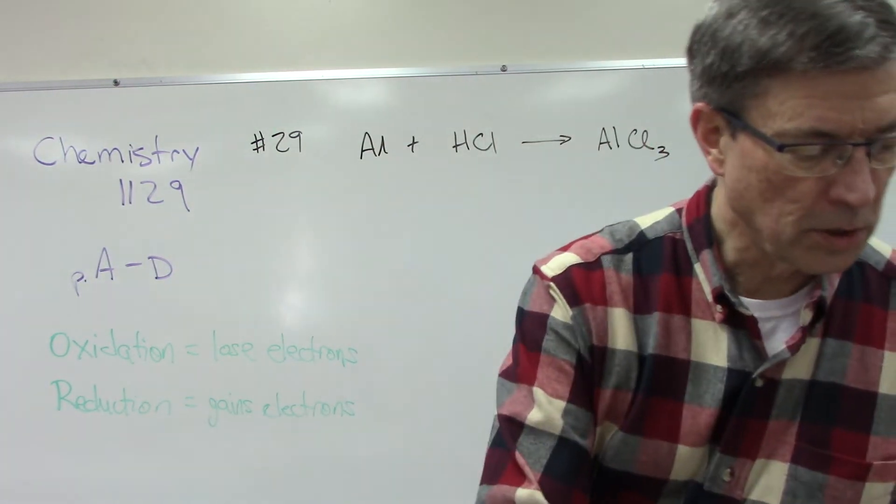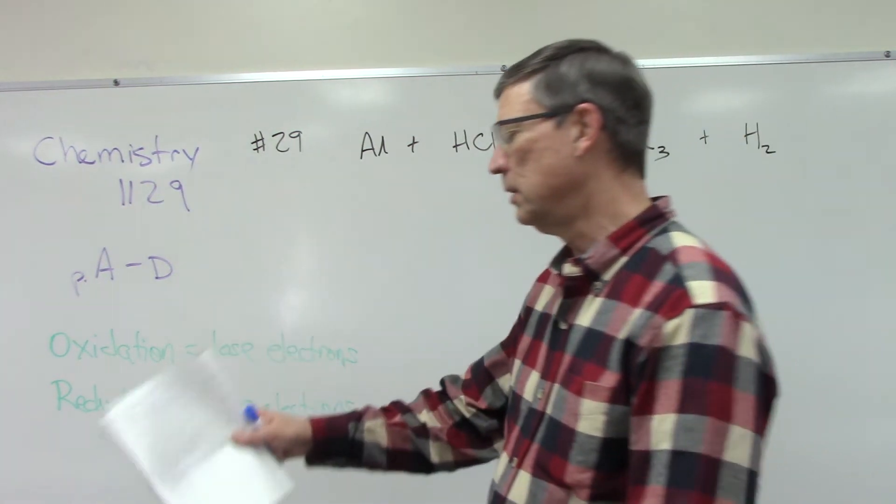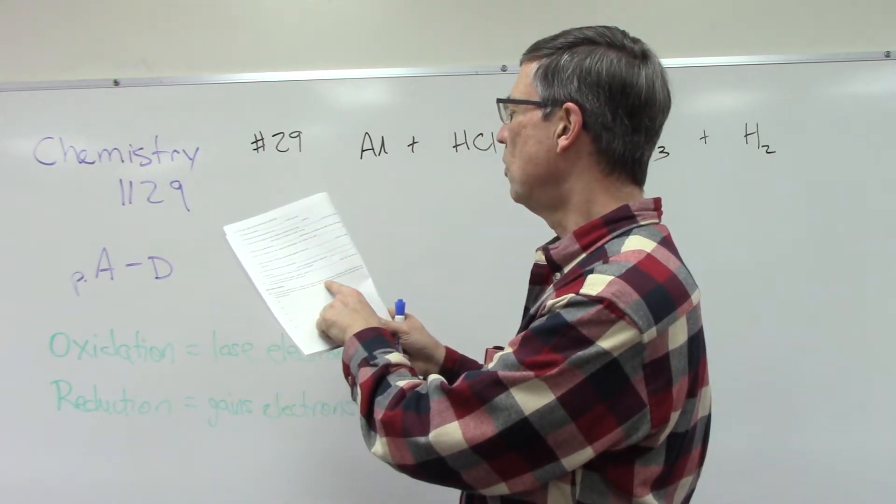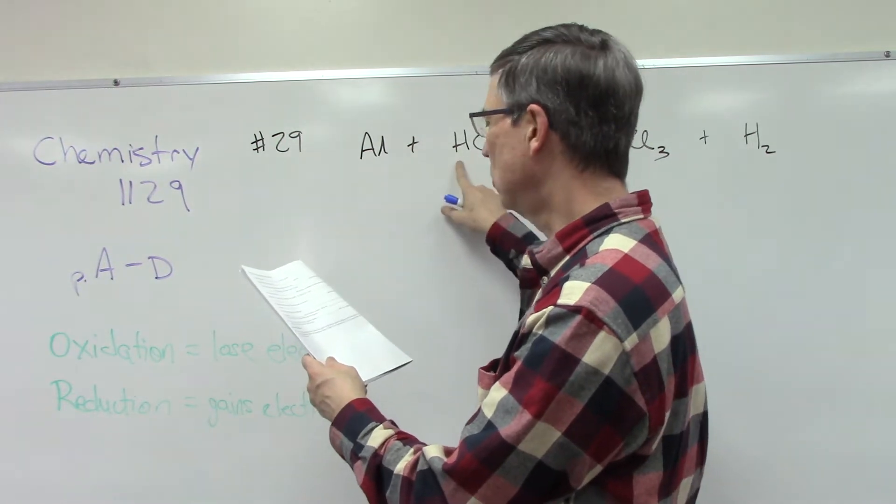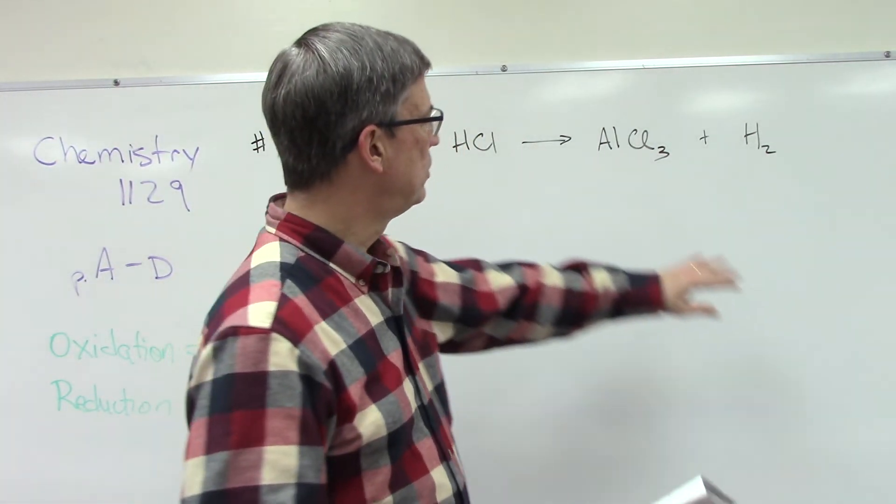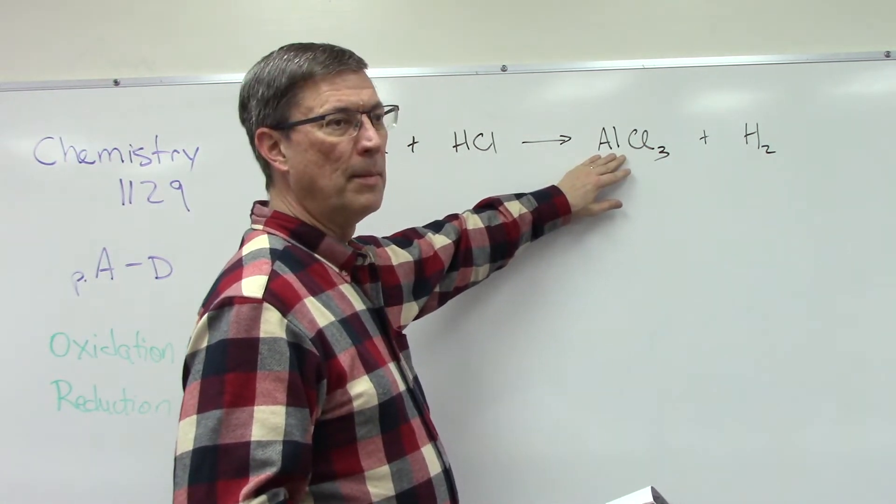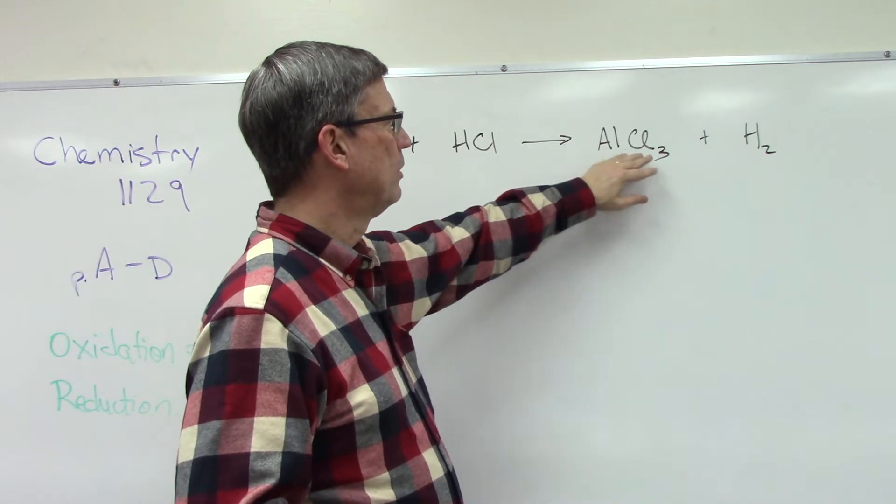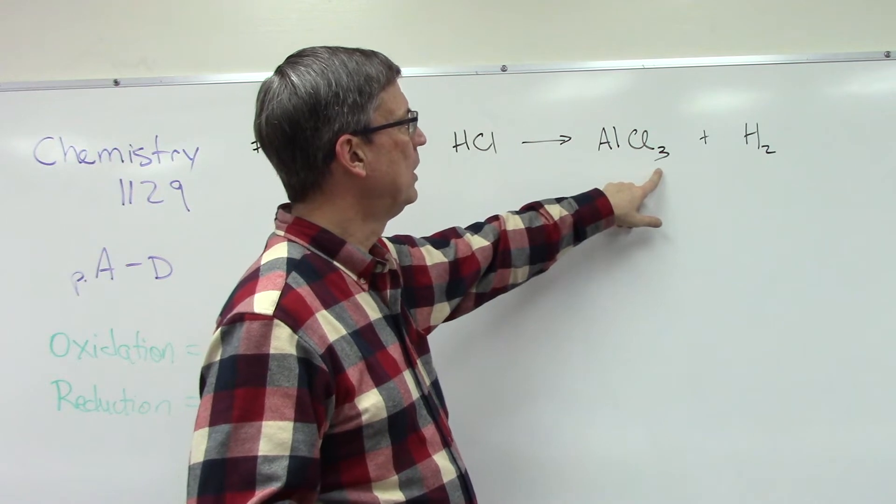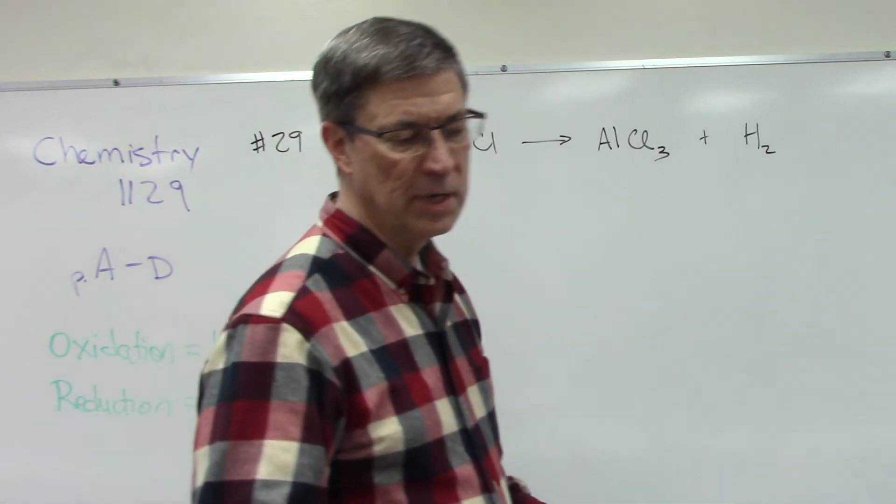This problem tells us we are using electron transfer method to balance the equation involving the reaction of aluminum with hydrochloric acid, which I know is HCl, and it's going to produce aluminum chloride. Aluminum has an oxidation number of three and chlorine is negative one, so positive three, negative one - that's why I know it's AlCl3 and then hydrogen.